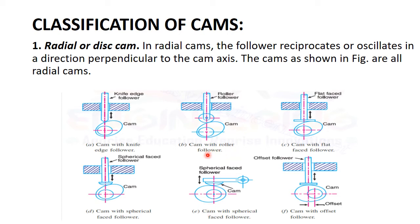In this diagram you can see that the follower oscillates, and the axis of the follower and the axis of the cam do not coincide with each other. There is some distance 'e' from the axis of the cam to the axis of the follower. This case is called the offset follower.